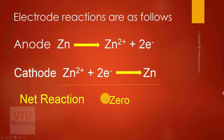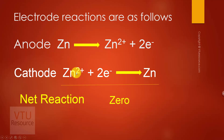The cell reactions occurring in the zinc concentration cell are as follows. At the anode, zinc undergoes oxidation to give Zn²⁺ and two electrons. At the cathode, Zn²⁺ undergoes reduction by accepting two electrons and gives zinc. The net reaction is zero in any concentration cell.